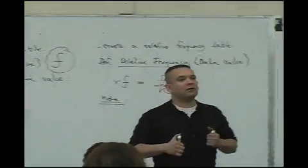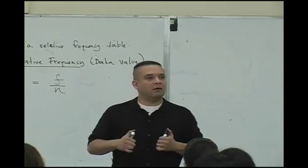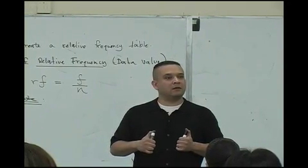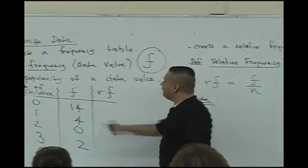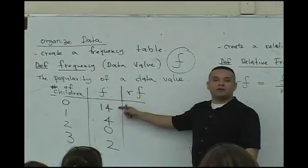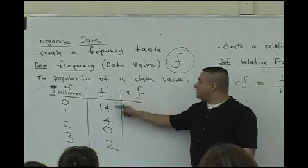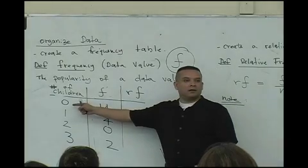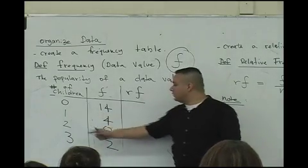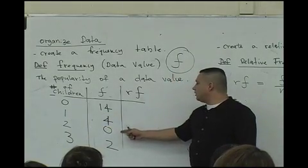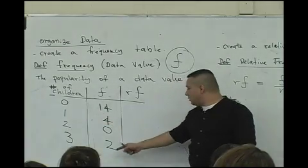What would we do? Why would you add the frequencies? Well, remember, if the frequency is how popular the data value is, that means that there's 14 zeros. There's 4 ones, there's 0 twos, and there's 2 threes.